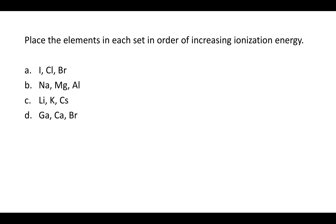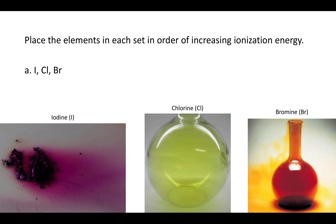These questions are asking the same thing but in a different way. They say: place the elements in each set in order of increasing ionization energy — that's from the lowest ionization energy to the highest. So what is that order for iodine, chlorine, or bromine?